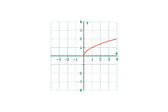Do you know how to identify the graph of a square root function? Let's take a look at one. Here's the graph of a square root function. The first thing you'll notice is that this graph is a curve and not a straight line. The graphs of square root functions are curves.